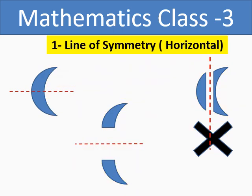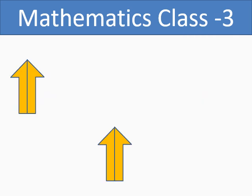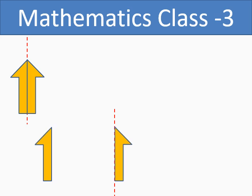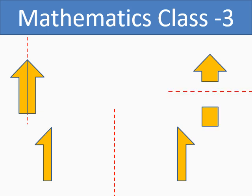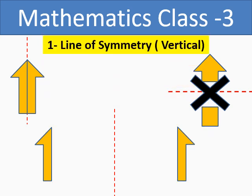Let us take one more example — the shape of an arrow. Draw the vertical line passing from the middle. So you will get two equal halves along the vertical line, and we can say we have a vertical line of symmetry. Now if you take the same arrow and cut it horizontally, you will not get two equal halves, so there is no horizontal line of symmetry. In this shape also, we have one line of symmetry.